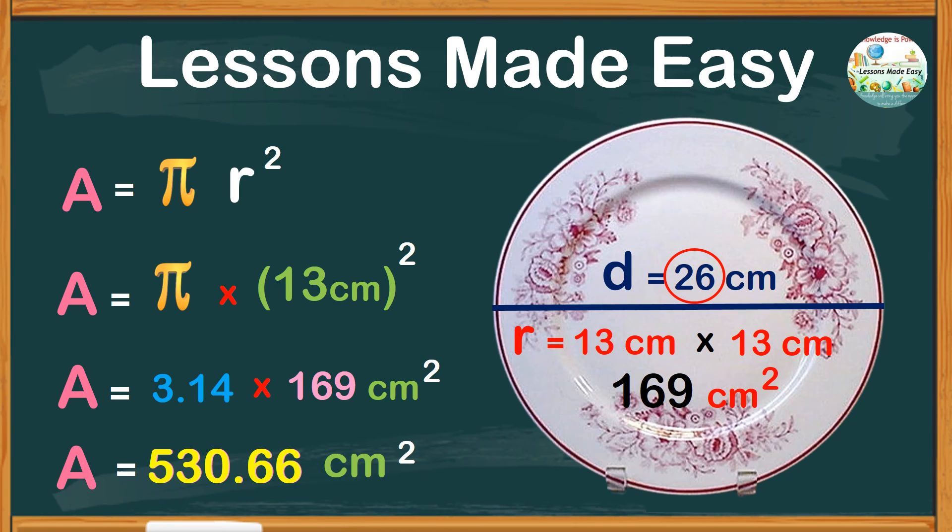So there you have it. Just remember that area is measured in square units. As you can see, there's 2 as the exponent because when you say area, we are actually working with a two-dimensional shape. I do hope that now you have a better understanding on how to find the area of a circle.